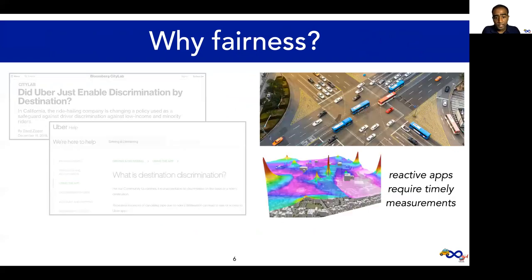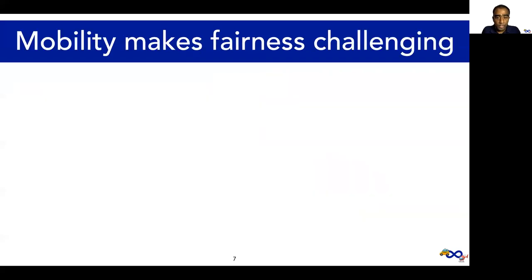Moreover, many aerial sensing apps are reactive, meaning that their sensing preferences change as drones gather measurements. In order for these apps to make progress toward their sensing goals, while coexisting with other apps on the same shared platform, they need measurements in a timely manner. Now it turns out that shared mobility makes it very complicated to reason about and optimize for fairness.